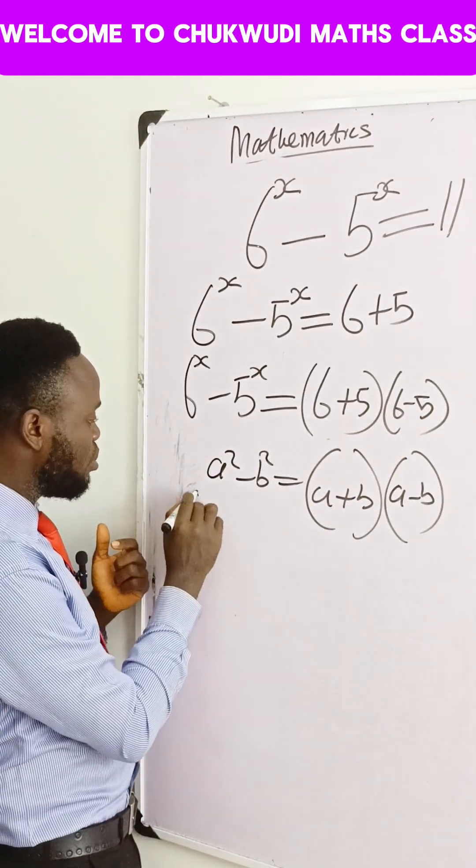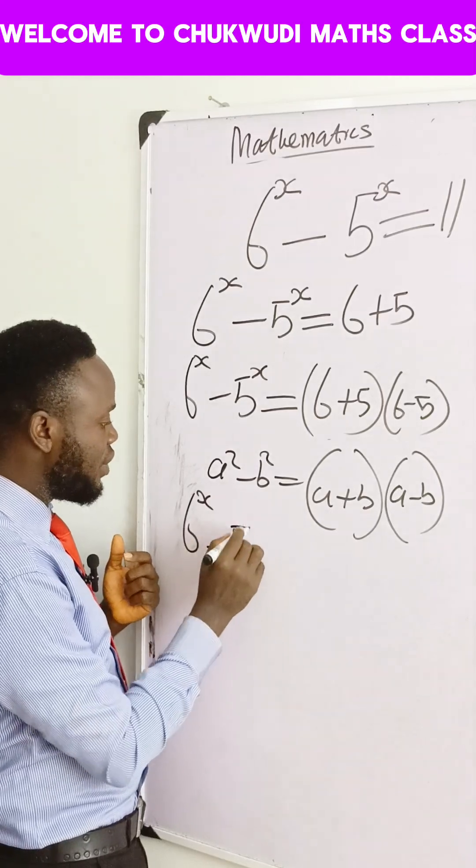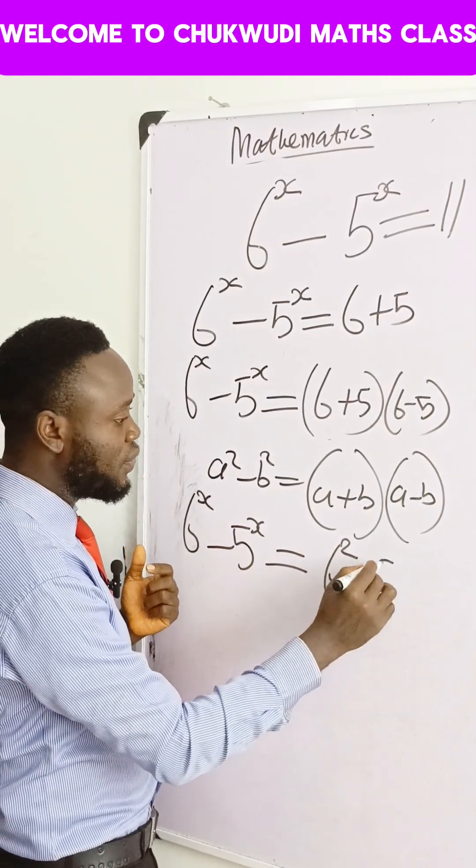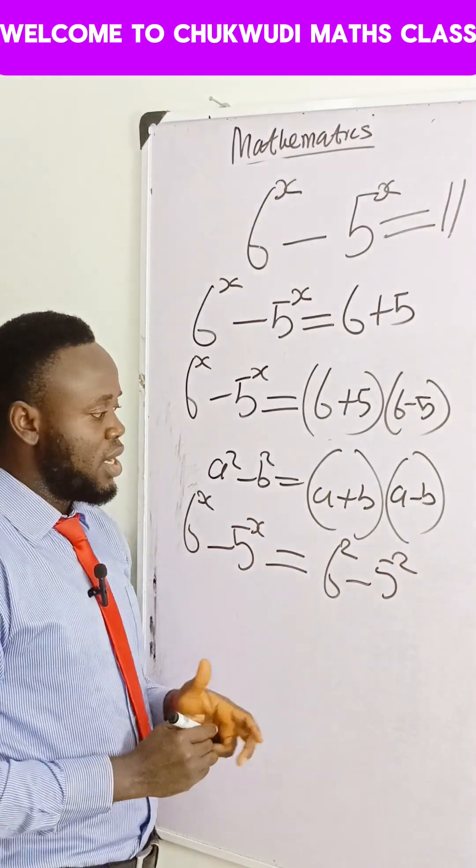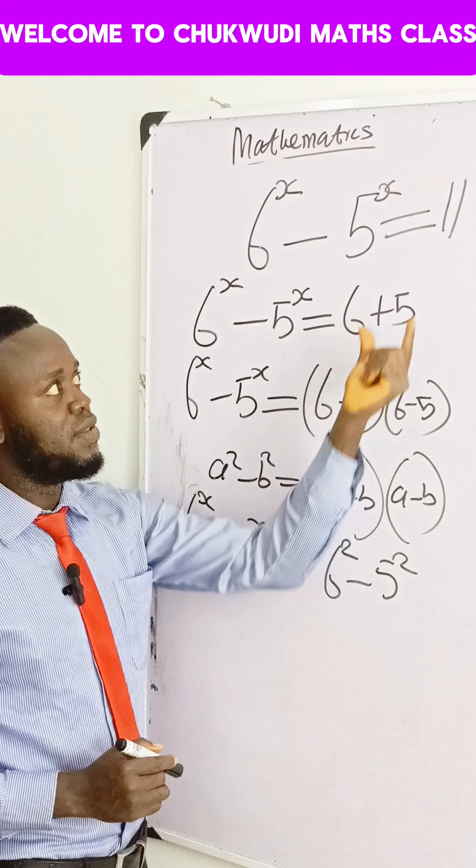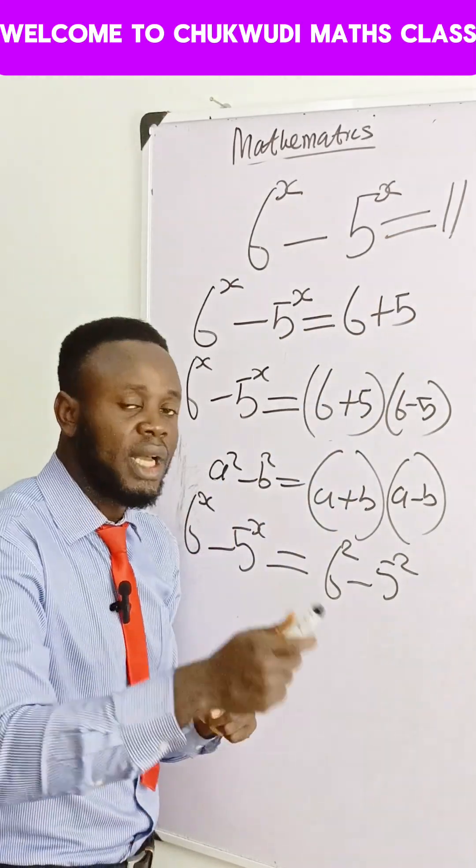Therefore, if I do that, I now have 6 raised to power x minus 5 raised to power x is equal to 6 squared minus 5 squared. That's the difference of two squares. If we apply this formula here, it gives us this. And if we apply this, it will still give you 11. So we have not altered anything yet.